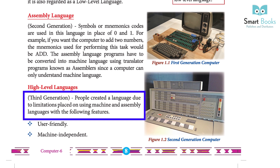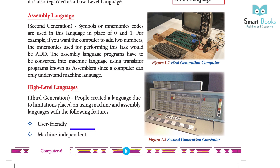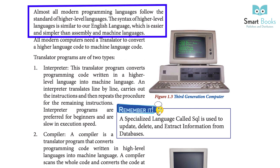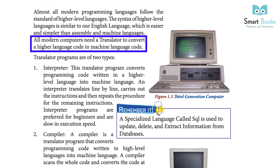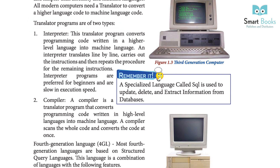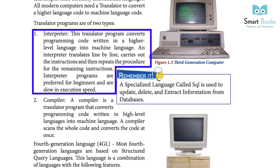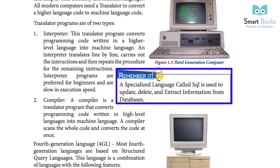High level language (third generation): people created this language due to limitations of machine and assembly language. It is user-friendly and machine-independent. Almost all modern programming languages follow the standard of high level languages, whose syntax is similar to English — easier and simpler than assembly and machine languages. All modern computers need a translator to convert high level code to machine language. One type of translator is the interpreter, which translates code line by line, carries out each instruction, then repeats the procedure. Interpreter programs are preferred for beginners but are slow in execution speed.